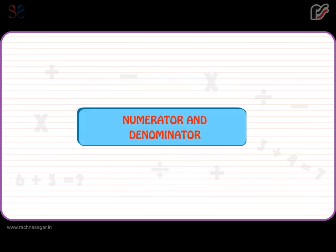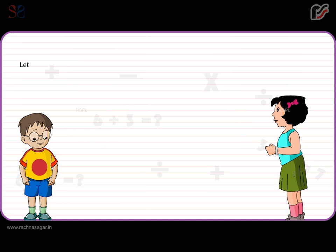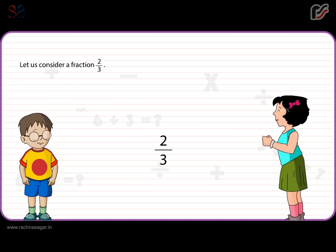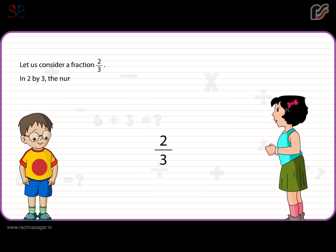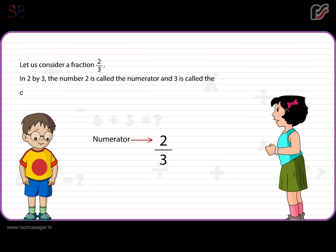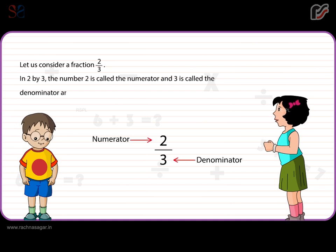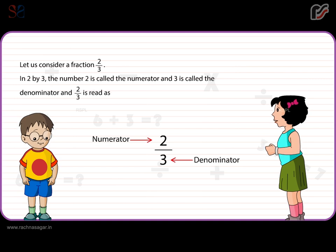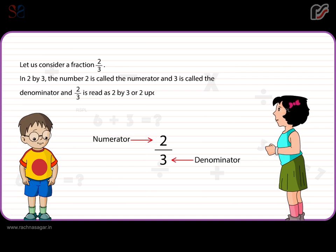Numerator and Denominator. Let us consider a fraction two by three. In two by three, the number two is called the numerator and three is called the denominator, and two by three is read as two by three or two upon three.